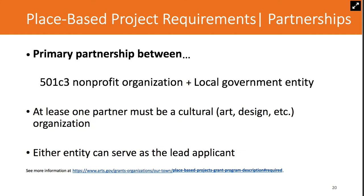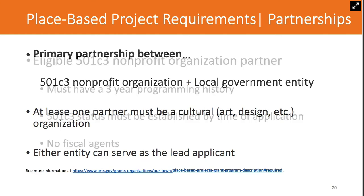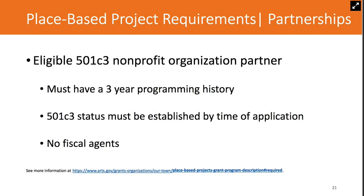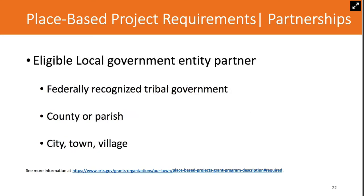You're also encouraged to include letters of support from additional partners, although those are not required. An eligible nonprofit must have its own 501(c)(3) status at the time of application—we cannot support fiscally sponsored organizations. At the time of application, this organization must also be able to demonstrate at least three years of programming history. An eligible local government entity could include counties, parishes, cities, towns, villages, or federally recognized tribal governments. State government entities are not eligible to fulfill the local government entity requirements, and that includes state universities.